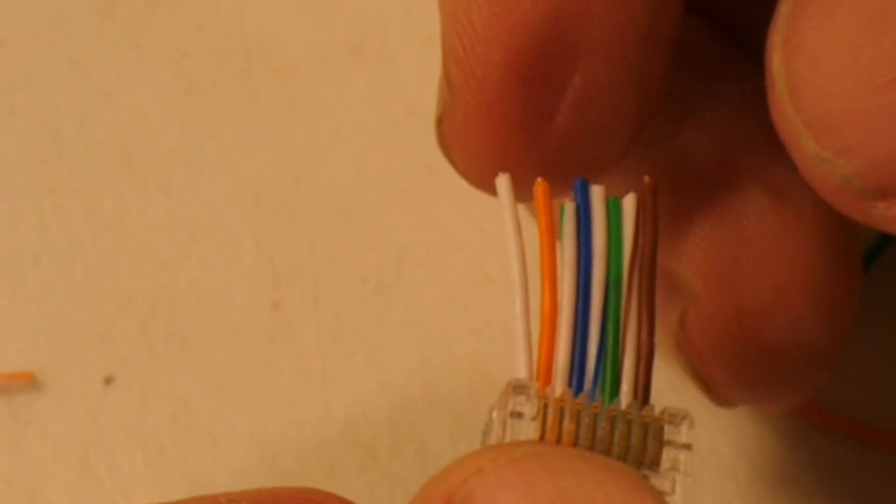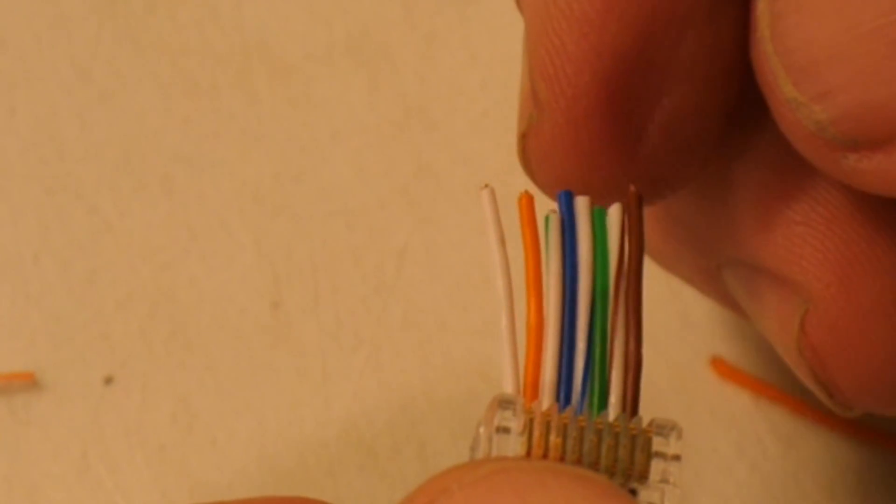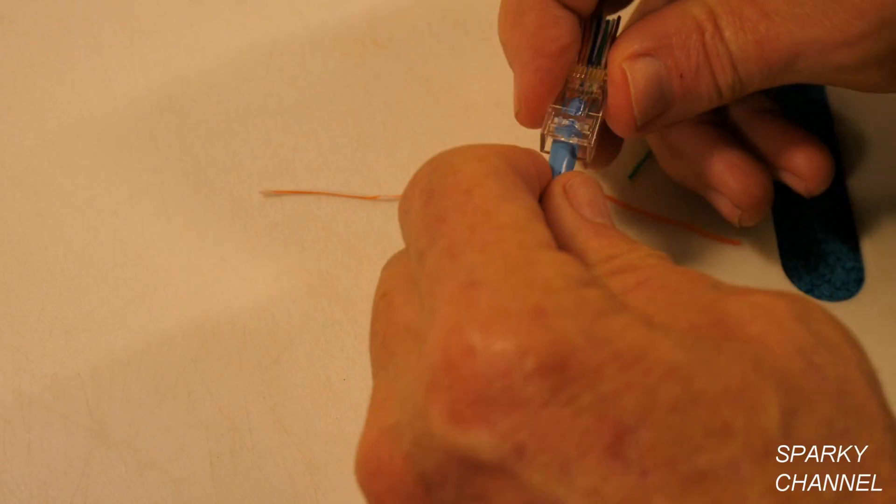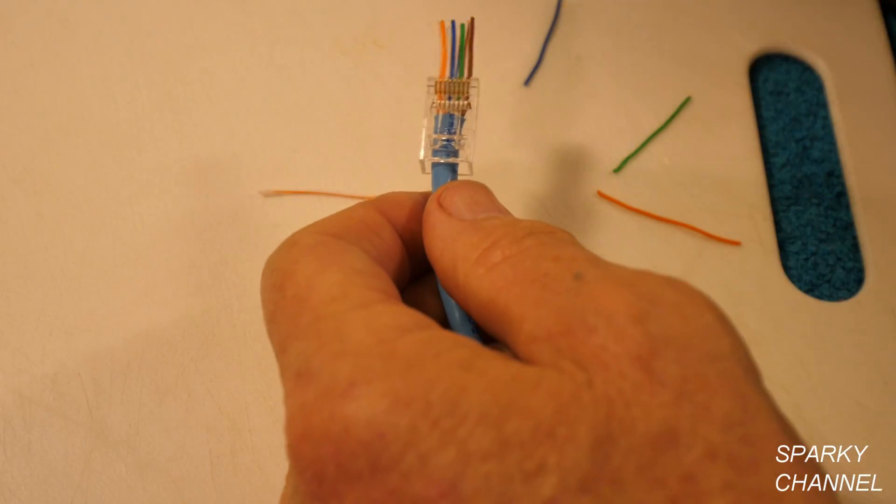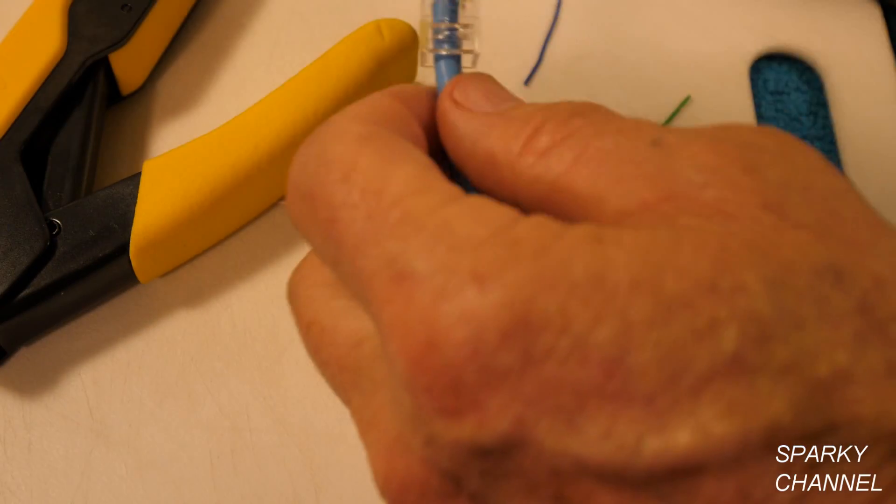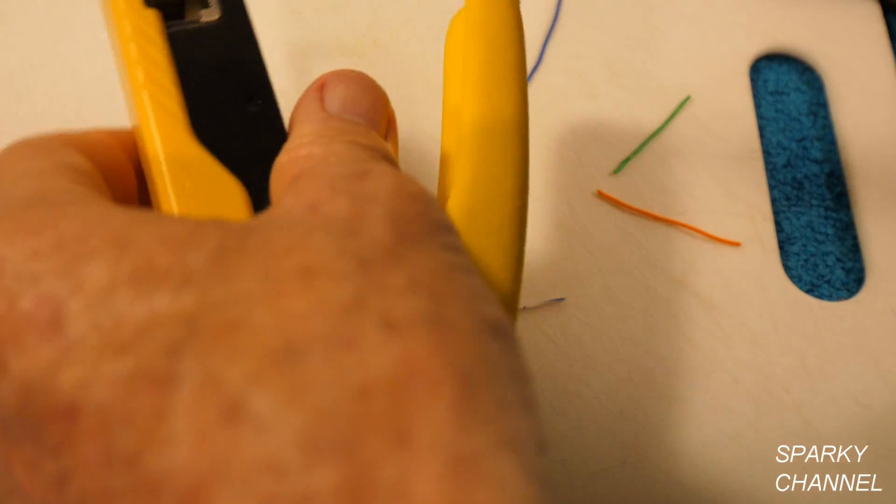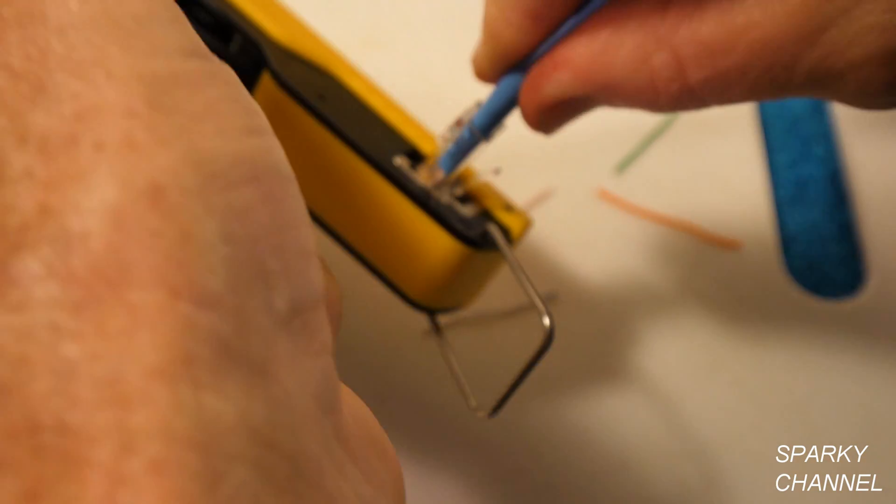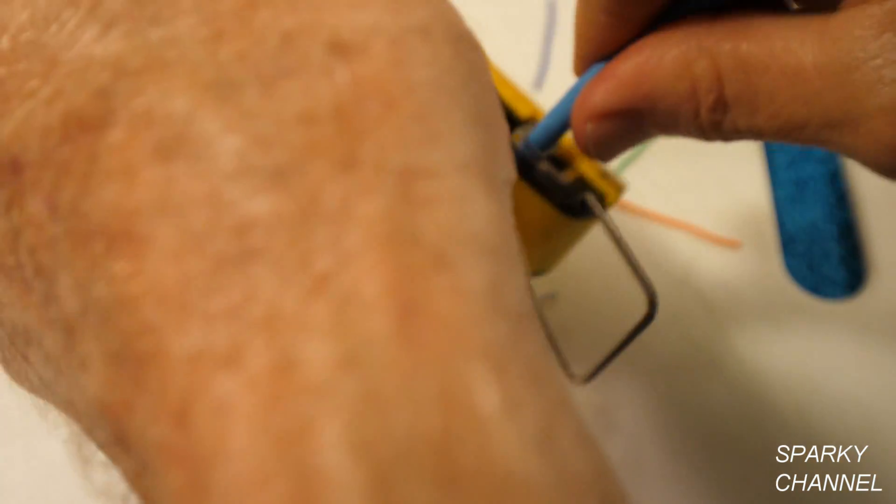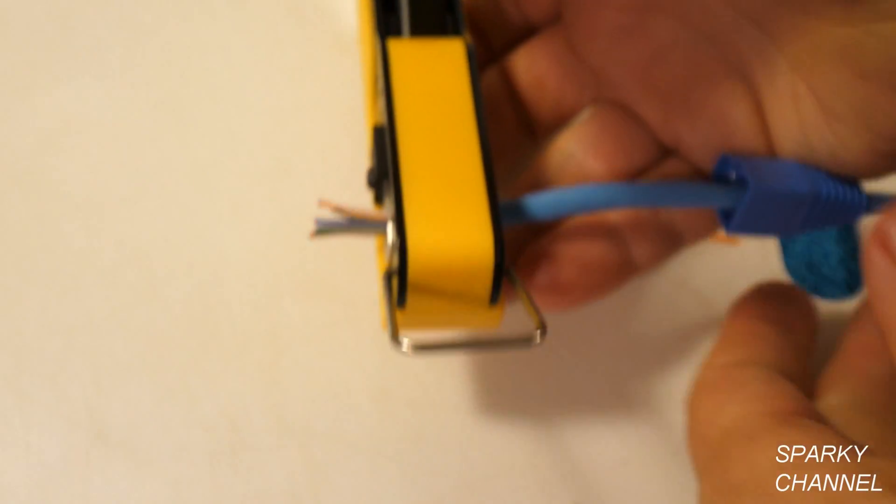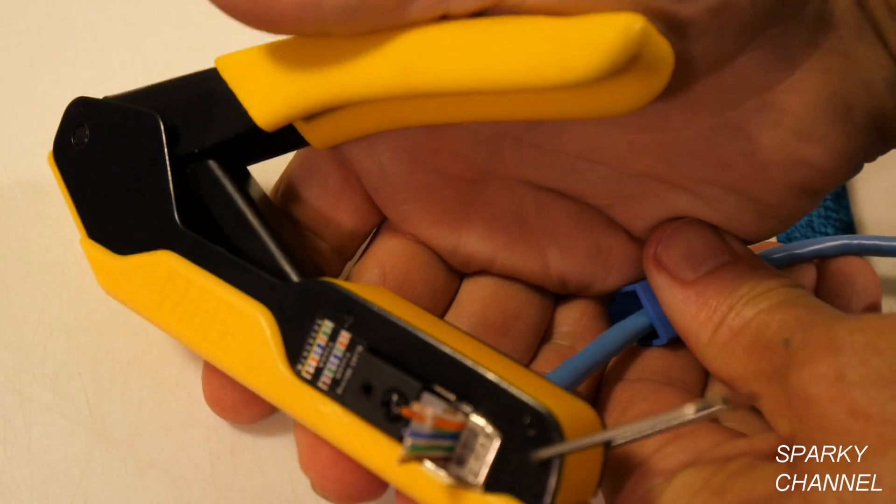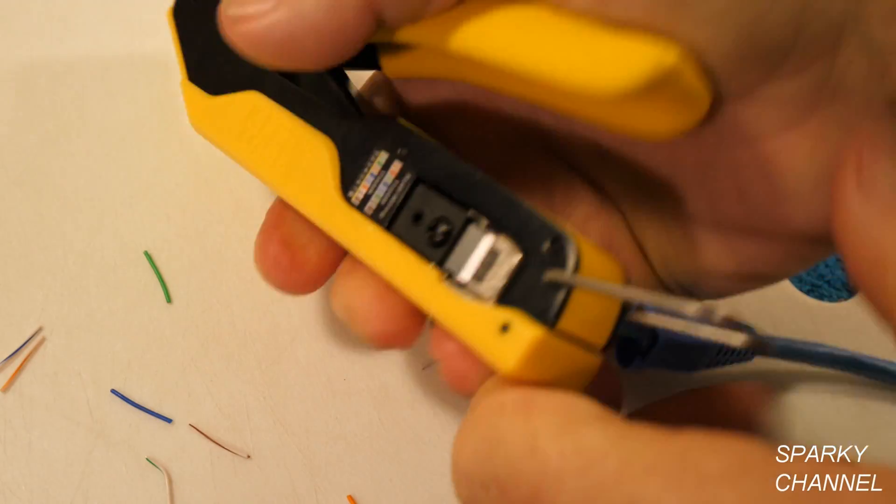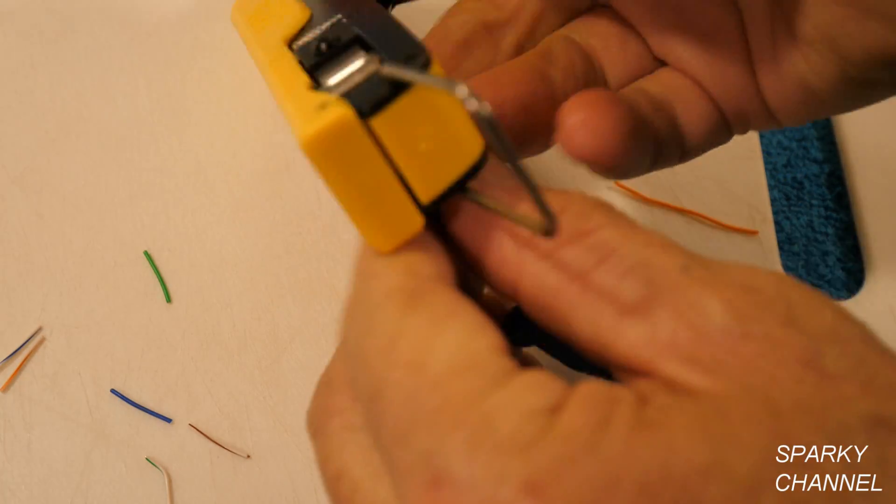Let's check it out. We've got white, orange, orange. White, green, blue. White, blue, green. White, brown, brown. That is 100% correct. So we're going to try out the new crimper. The new compact modular crimper. So put it in right like that. Turn it around. And there it goes. Oh, that was nice. That worked good. It comes out.